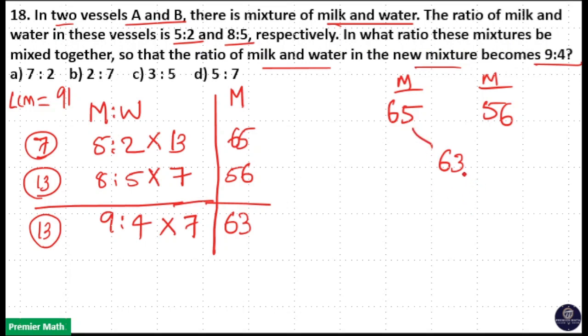65 minus 63 is equal to 2. 63 minus 56 is equal to 7. So, 7 is to 2 is your ratio. Option A is your answer.